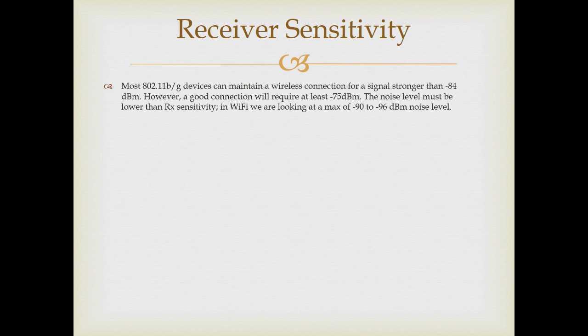Receiver sensitivity is another very important factor. A typical access point should have receiver sensitivity somewhere in the minus 85 dBm range. What we're looking for for a good signal is somewhere in the neighborhood of minus 75 dBm. The receiver sensitivity has to be at a lower level than the noise level, and typically we expect to see noise somewhere between minus 95 and minus 100 dBm.